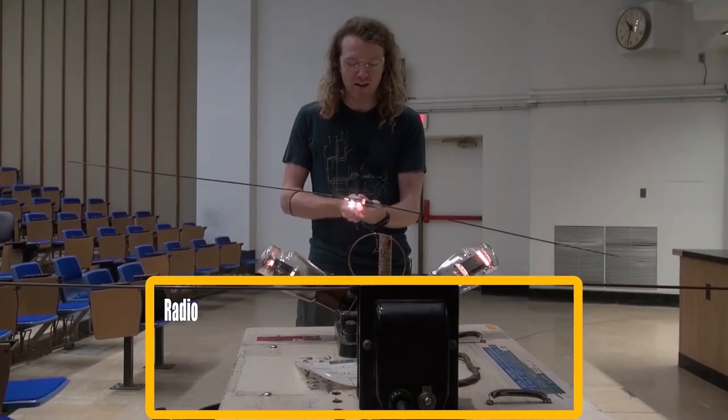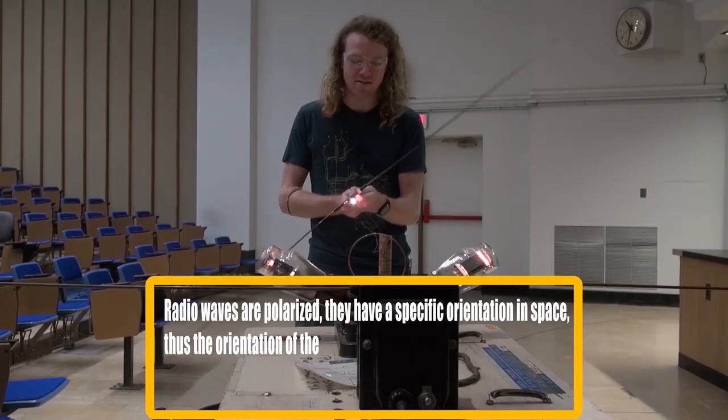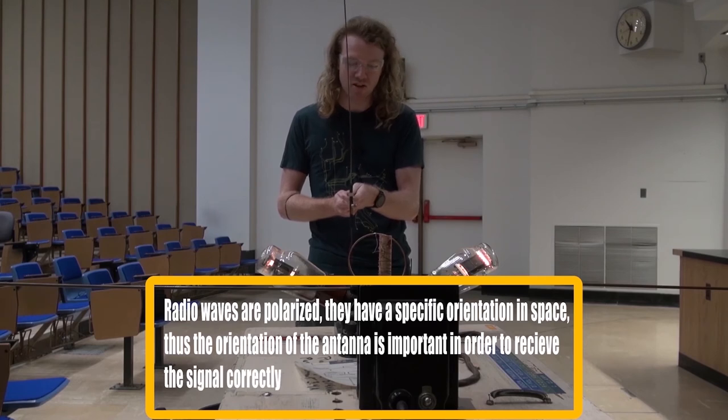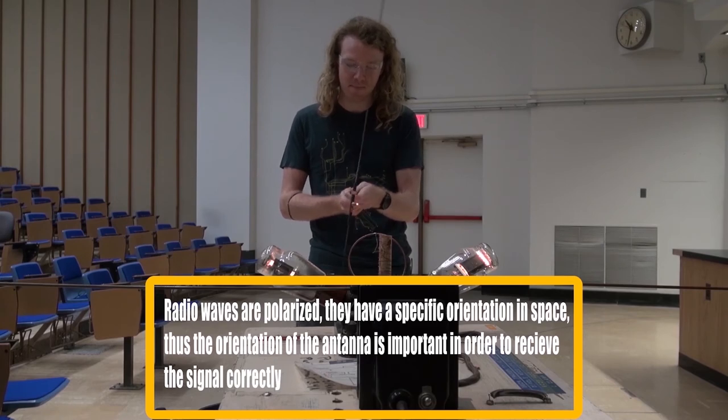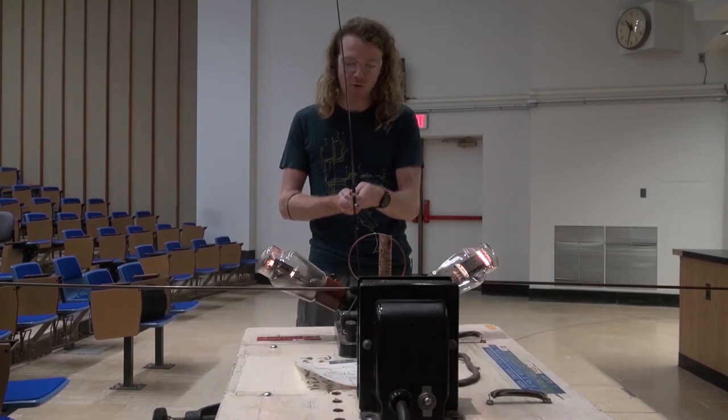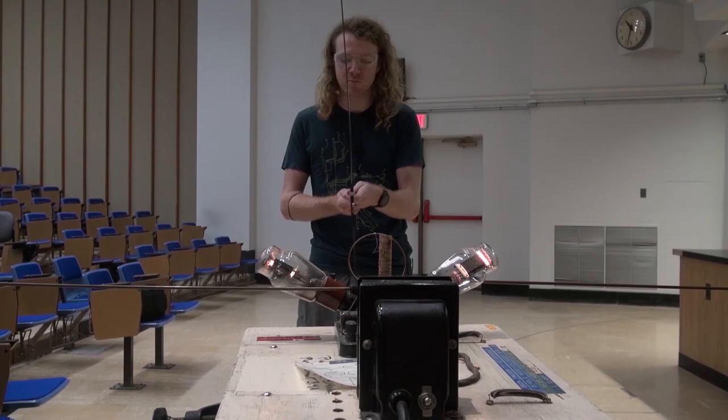So we can see very clearly that our radio waves are polarized. They have a very particular orientation in space, and thus the orientation of our antennae is important for us being able to receive the signal correctly. And this is a property of all electromagnetic waves, that they can possess this polarization.